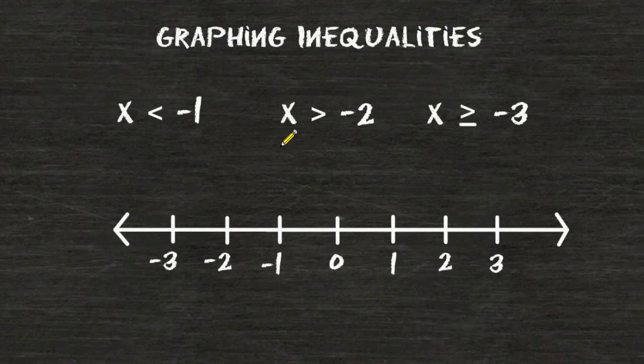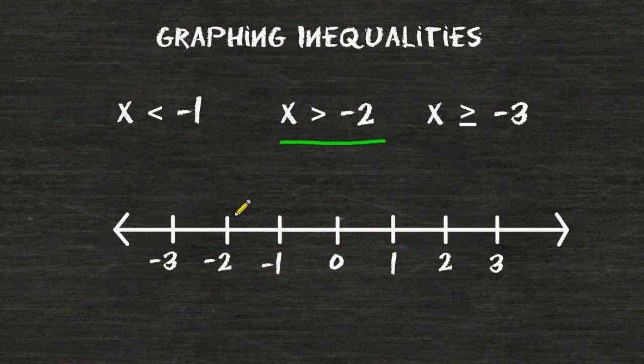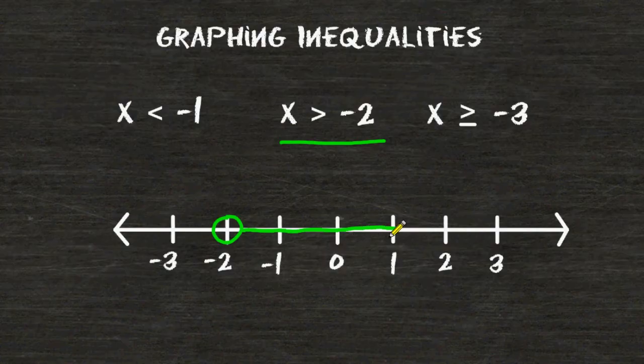Now let's graph the inequality x is greater than negative 2. First we locate negative 2 on our number line and draw an open circle directly above negative 2 and then we are going to draw an arrow moving to the right on our number line because this is the part of the number line where all values are greater than negative 2.